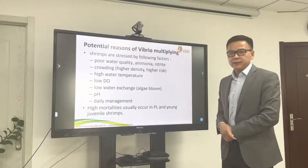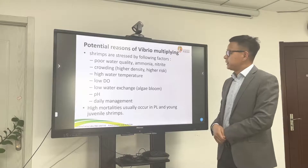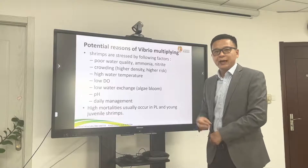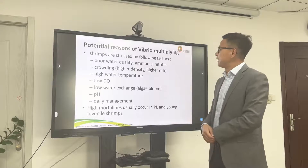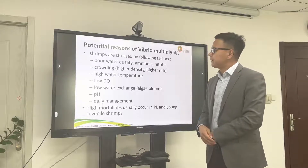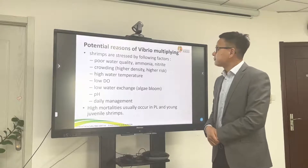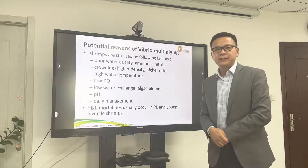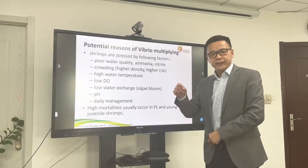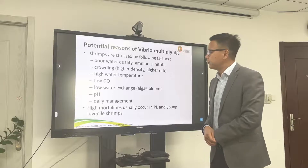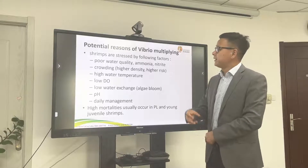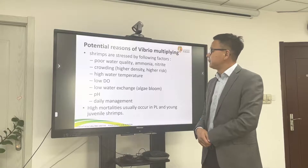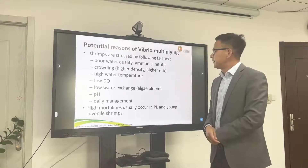The potential reasons for Vibrio multiplying: when your shrimp are under stress from the following factors. Poor water quality — ammonia and nitrite. When ammonia and nitrite go up, they definitely will damage the epithelial cells of the hepatopancreas, and the shrimp will stop feeding or feed less. Another factor is overcrowding. From different countries the density will vary a lot. In China we can reach 1,500 PL per square meter, but in India and Ecuador, only 5 to 30 per square meter. So the higher the density, the higher the risk.